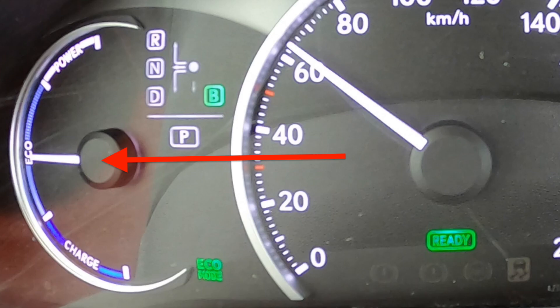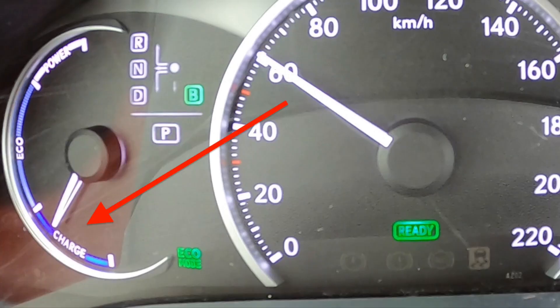When it is blue, you can see how efficiently we are driving. What is important here is when it gets down into the charge area, the further down it is, the more we are charging the batteries.